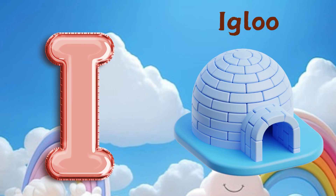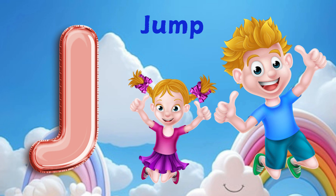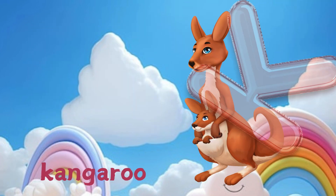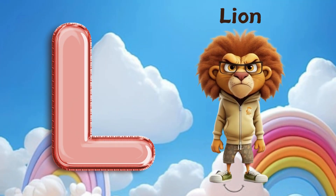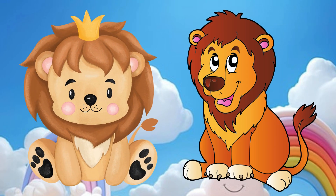I is for igloo, i-i-igloo. J is for jump, j-j-jump. K is for kangaroo, k-k-kangaroo. L is for lion, l-l-lion.